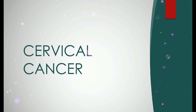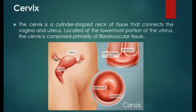Cervical Cancer. The cervix is a cylinder-shaped neck of tissue that connects the vagina and uterus. Located at the lowermost portion of the uterus, the cervix is composed primarily of fibromuscular tissue. There are two main portions of the cervix. The part of the cervix that can be seen from inside the vagina during a gynecologic examination is known as the ectocervix.